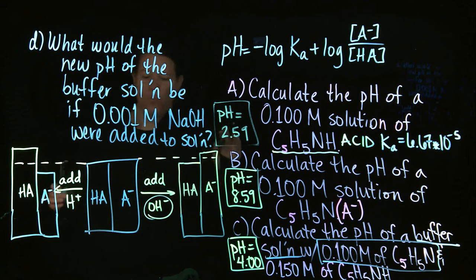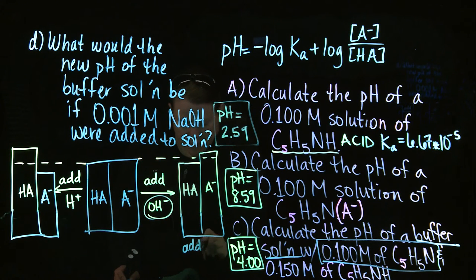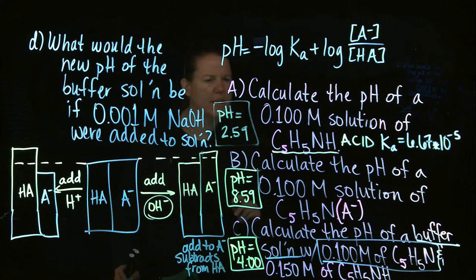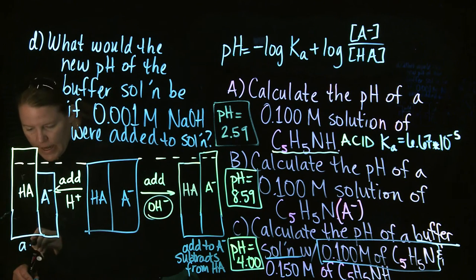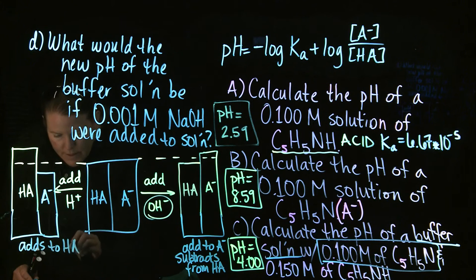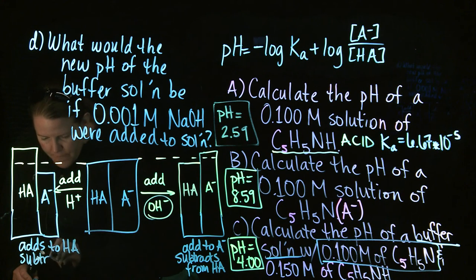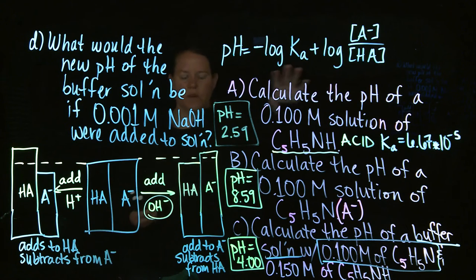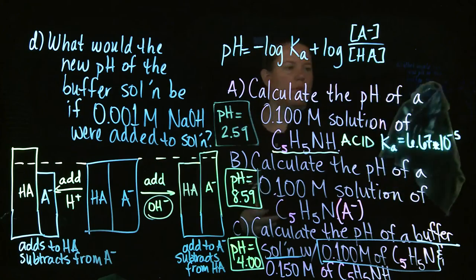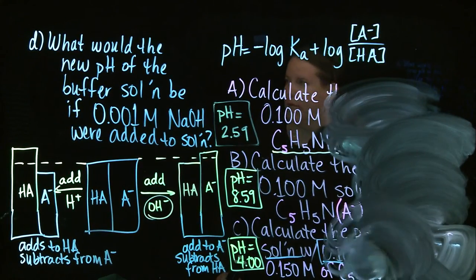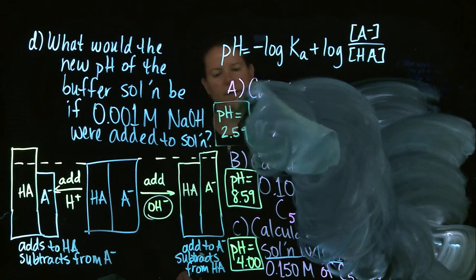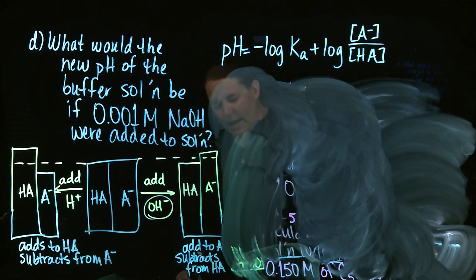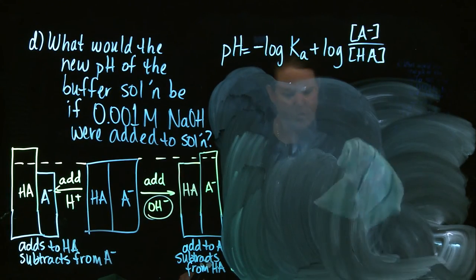So you kind of get the point that when we add base, it adds to A- and subtracts from HA. When I add acid, it adds to the acid, but subtracts from the base. So having said that, now that we're done with our whole problem over here, let's erase that. And let's do this calculation over again with the thought that I have now added some base to my original amounts.